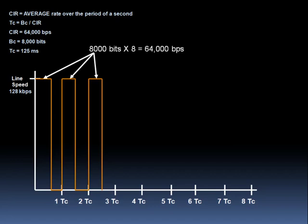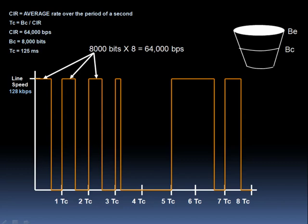In fact, there's one other variable we haven't mentioned yet, and that's Be, the excess burst rate. Let's say that in future timing intervals, we don't have that much traffic to send. If we have a bigger token bucket - a token bucket that can hold more than 8,000 bits - we can send above and beyond Bc bits or bytes in a timing interval. That's going to allow us to temporarily burst above the CIR.